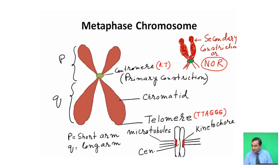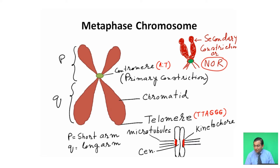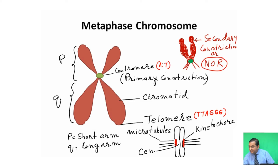The telomere end protects the chromosome. When telomeres are removed, the chromosome ends become sticky and fuse with other chromosomes. The telomere is rich in guanine; in almost all vertebrates, TTAGGG repeats are present in the telomere.